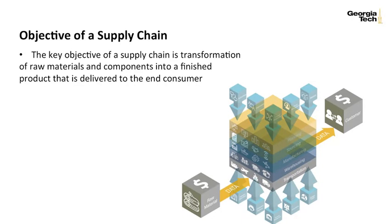Let's begin by discussing the overall objective of the supply chain, which is the transformation of raw materials and components into a finished product that is delivered to the end customer or consumer. Raw materials are basic, unprocessed materials that are used to produce goods, finished products, energy, or intermediate materials used as inputs to the creation of finished products. Examples may include sand, petroleum, trees, and minerals.